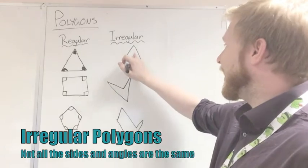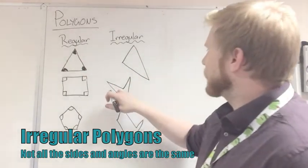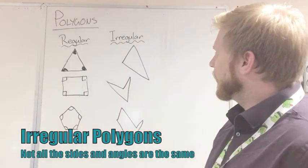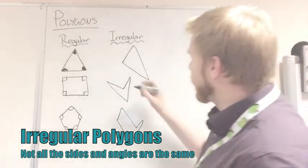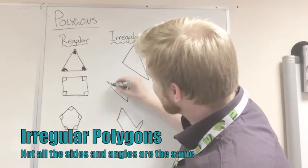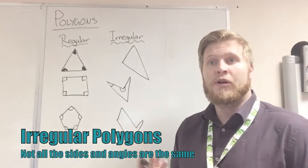So this triangle here, we can see this side is clearly longer, so it's not regular. We've got a four-sided shape here, we can see the sides might be the same length on certain ones, but we can clearly see this angle is a lot bigger than that angle, so that one's not a regular polygon.